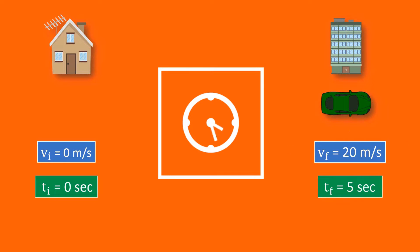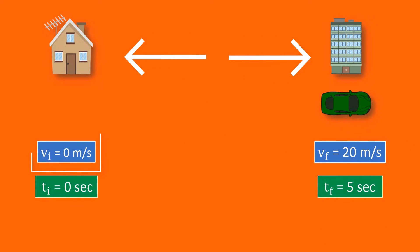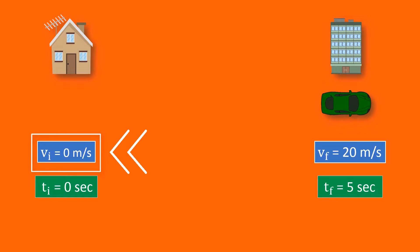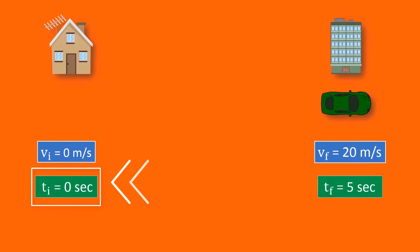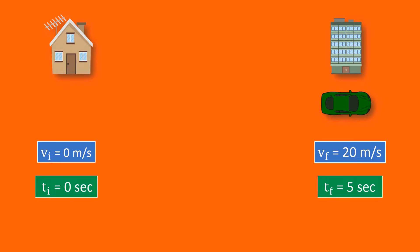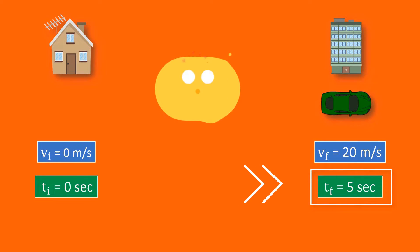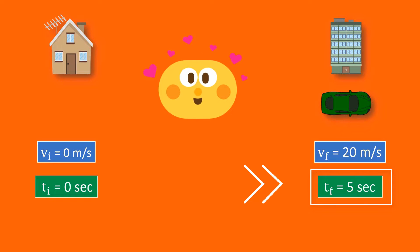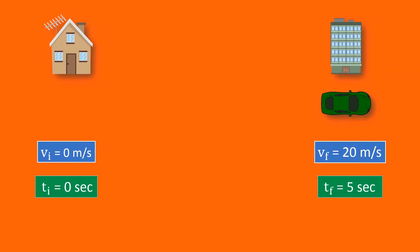You also noted down the time from your home to the city — let it be five seconds. So here, zero meters per second was your initial velocity vi, and zero seconds was your initial time ti. When you reached the city, your velocity was 20 meters per second, which is your final velocity vf, and five seconds is the final time tf.